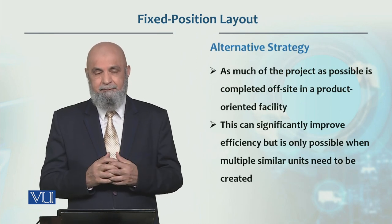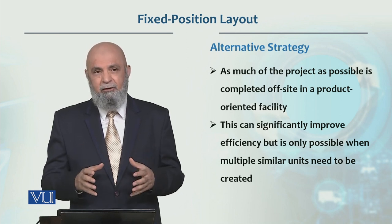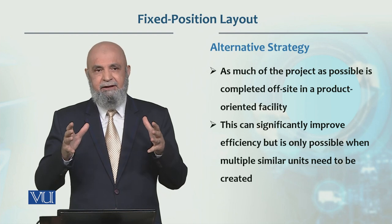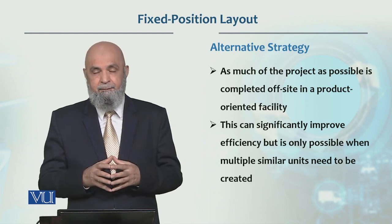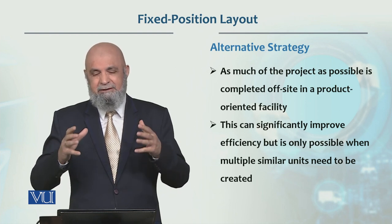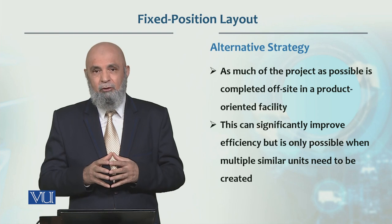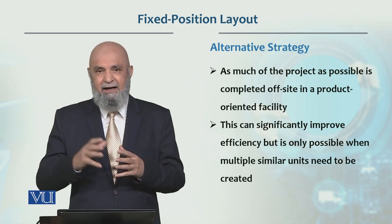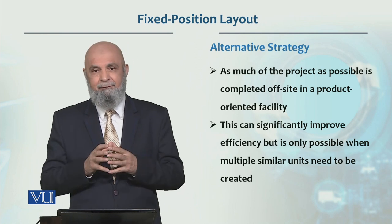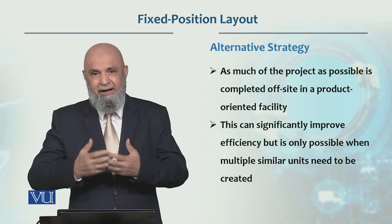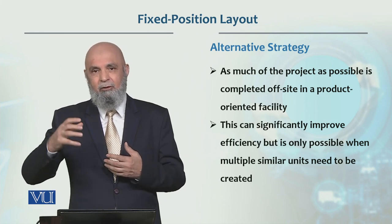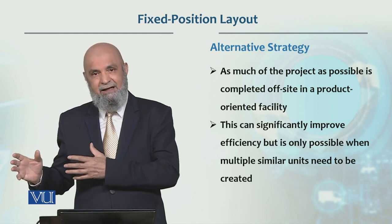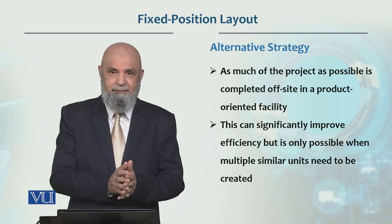An alternative strategy is that for products like a jumbo jet or a ship, similar types of modules can be used. This is a way in which the material flow, people's flow, and equipment flow can work effectively, because we have to produce and assemble.